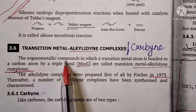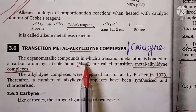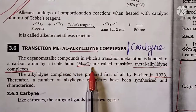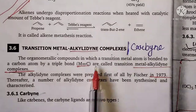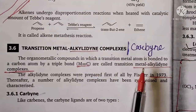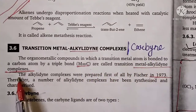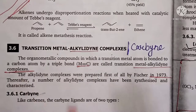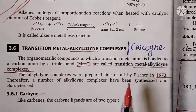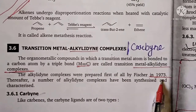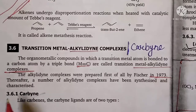In carbene there was a double bond present, and here what is present is a triple bond — we called it the carbyne complex, or the metal alkylidyne complex. This was first prepared in the laboratory by Fischer in 1973.